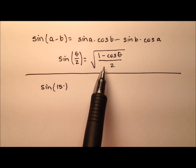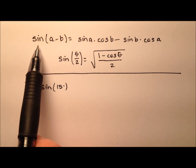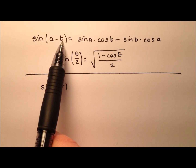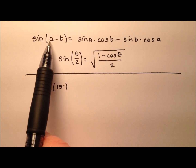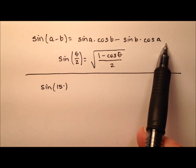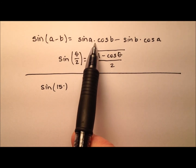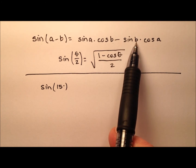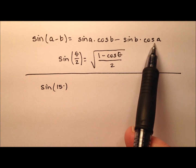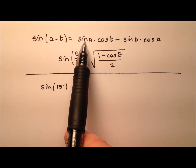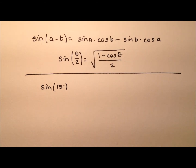So the formulas I have written out here — the difference identity for sine. We have two angles that we're subtracting, so it's the sine of A minus B, and ultimately that ends up being the sine of A times the cosine of B minus the sine of B times the cosine of A. You kind of just switch them around, but you keep the sine and cosine in both cases.